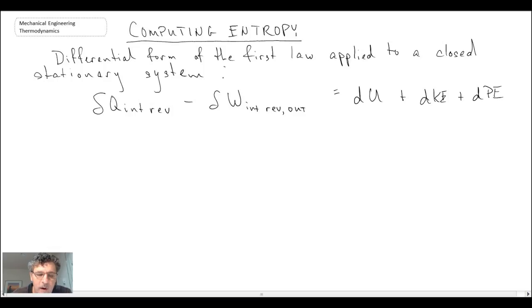First of all, we're talking about a stationary system. So it's not moving, and consequently, we can neglect kinetic energy as well as potential energy. And looking at the internal reversible work coming out of the system, let's say that the system could expand. It could be a piston-cylinder device, for example. And so in that case, we may have boundary work.